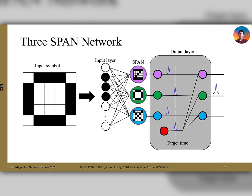The clock neuron, shown in red, spikes at the target time. This spike joins the spike from the SPAN corresponding to the inputted symbol to cause a strong enough signal for the postsynaptic neuron to fire, leading to a single output spike.